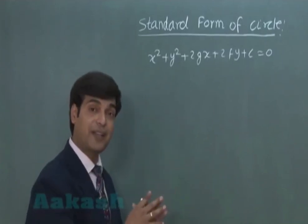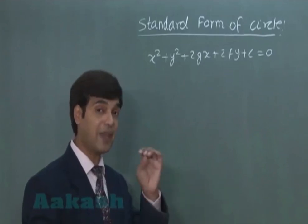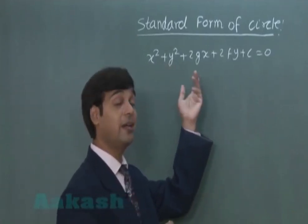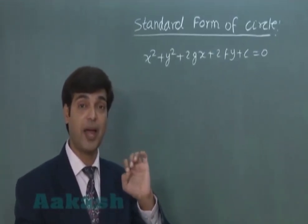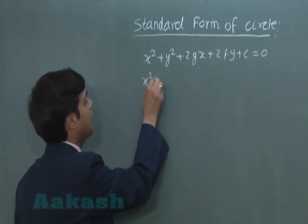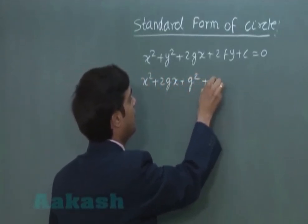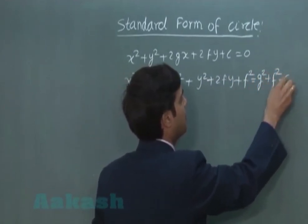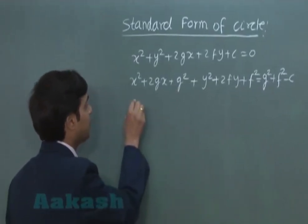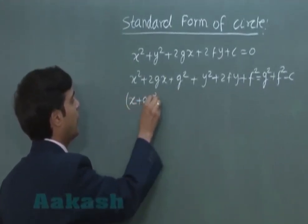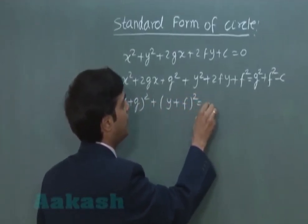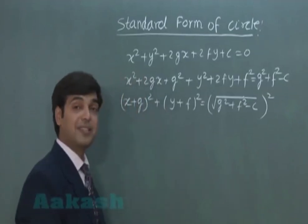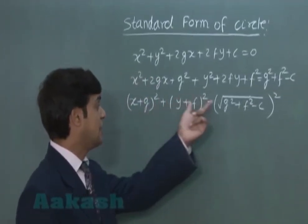Everything will be concluded from the definition part only, which gives the equation as x minus h whole square plus y minus k whole square equals r square. Let's convert the general equation into that form — sum of perfect squares in x and y. That gives x square plus 2gx plus g square plus y square plus 2fy plus f square is equal to g square plus f square minus c.